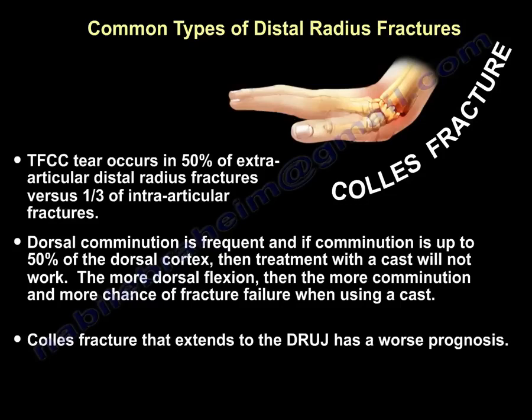Dorsal comminution is significant and important. If the comminution is up to 50 percent of the dorsal cortex, then treatment with a cast will not work. Some believe one-third cortex comminution will prohibit using a cast. The more dorsal comminution and dorsal flexion of the fragment, the more likely the fracture will not be treated adequately with a cast, and there will be failure of cast treatment.